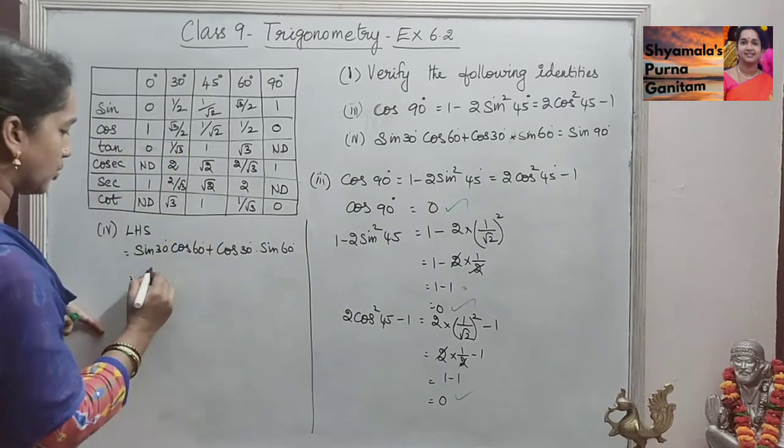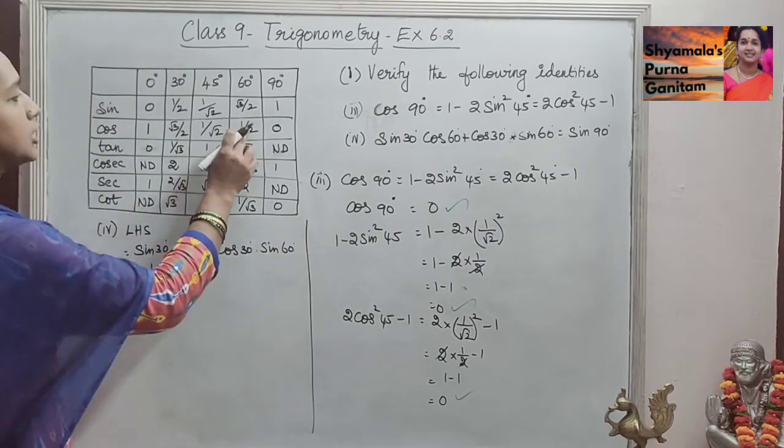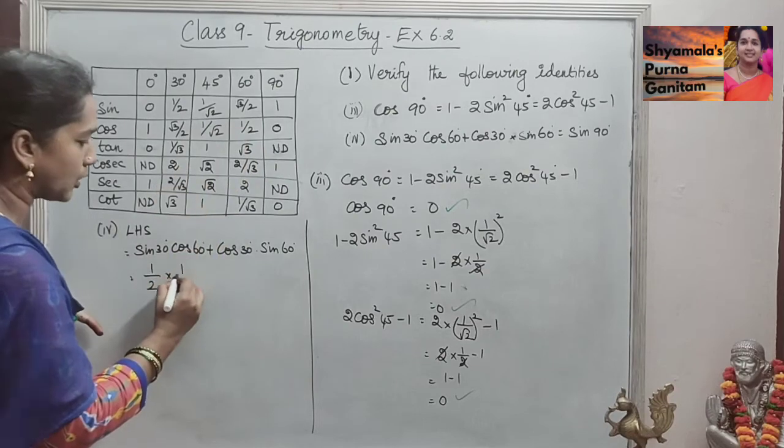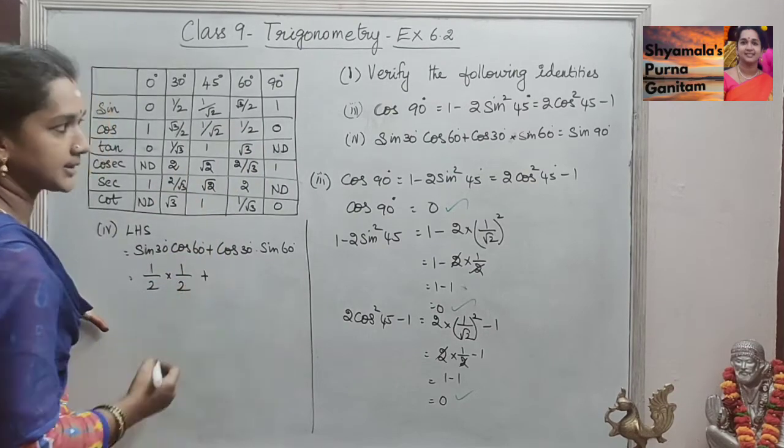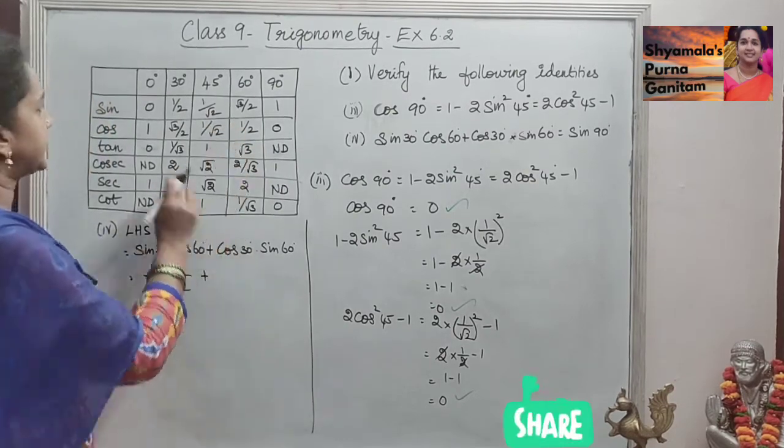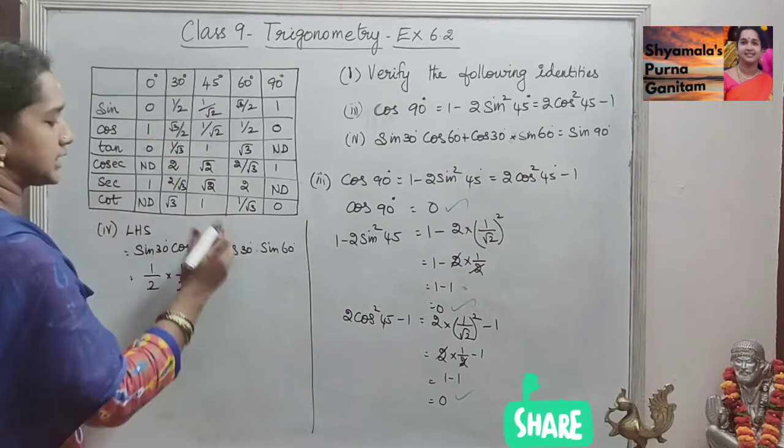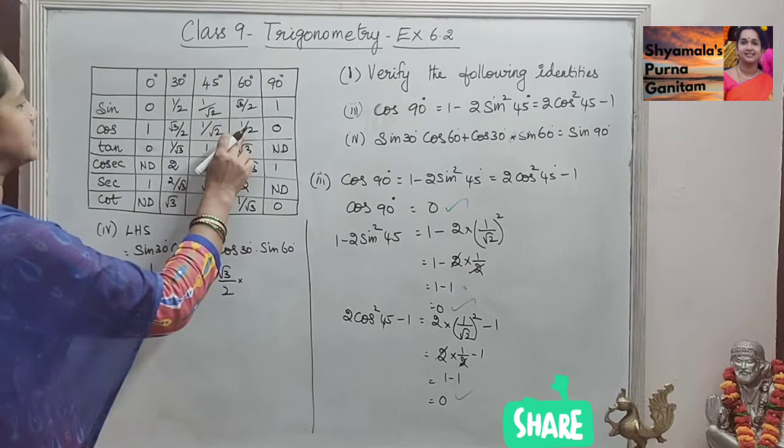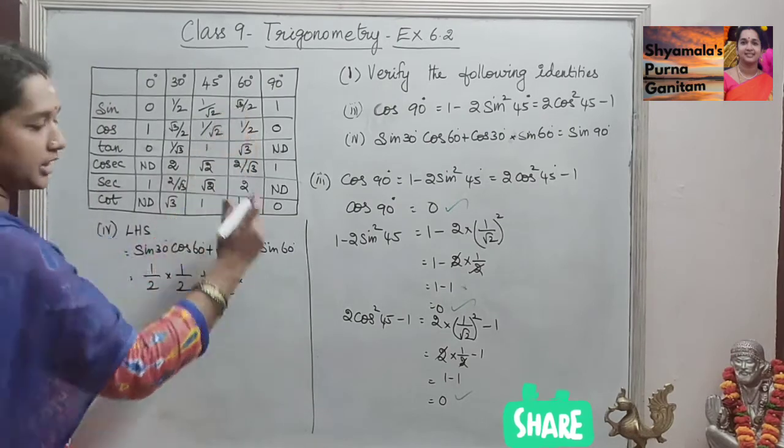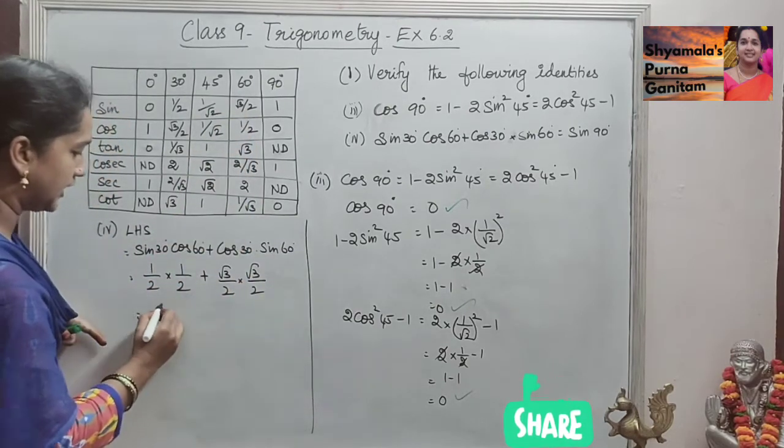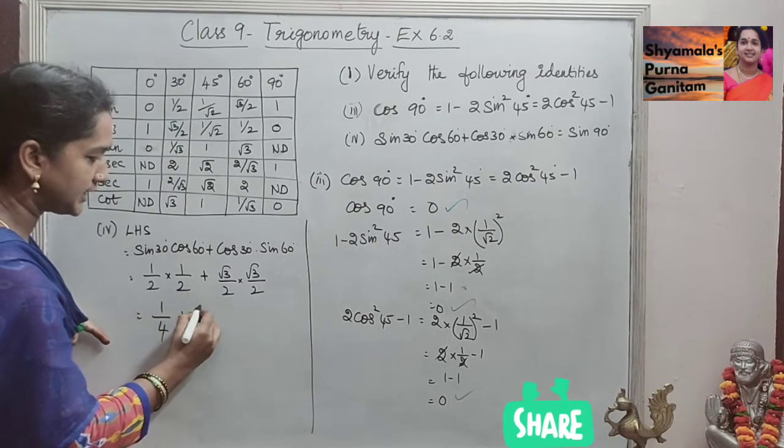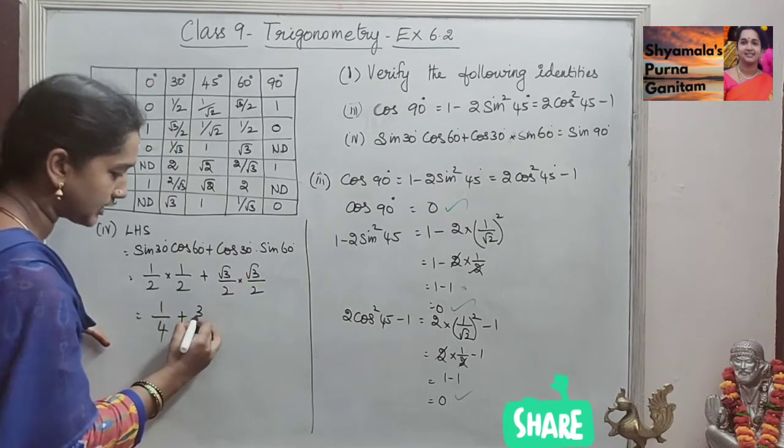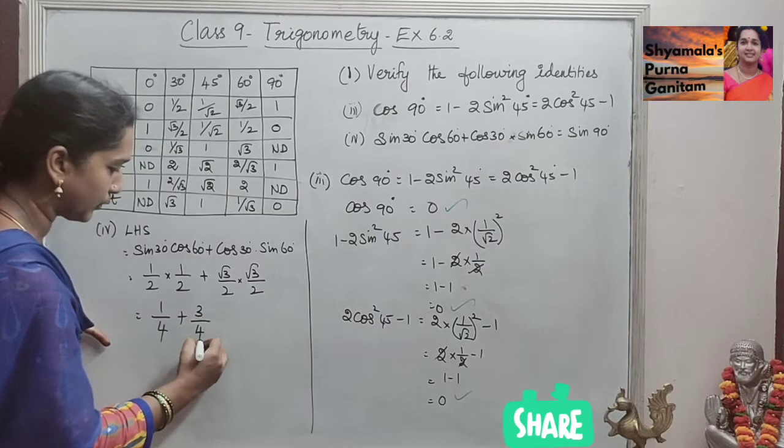So, sin 30° is 1 by 2 into cos 60° is also 1 by 2 here plus cos 30°, cos 30° is root 3 by 2 into sin 60° is root 3 by 2. Here it will be 1 by 4, so here it will be 1 by 4 plus root 3 into root 3 is 3 by 2 into 2 is 4.